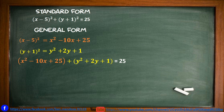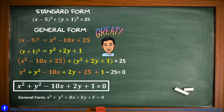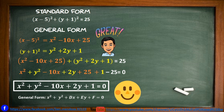Next, we follow the format of the general form, giving x squared plus y squared minus 10x plus 2y plus 25 plus 1 minus 25, moved to the left side, equals 0. Simplifying, we have x squared plus y squared minus 10x plus 2y plus 1 equals 0. That is the equation in general form.